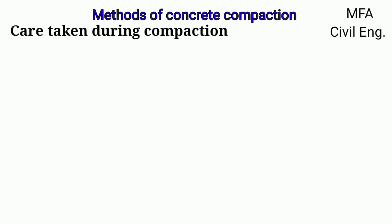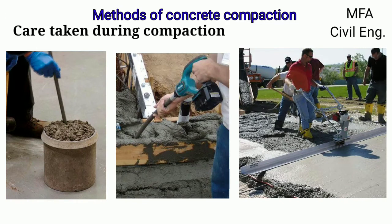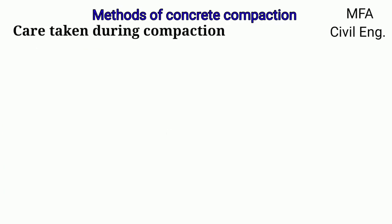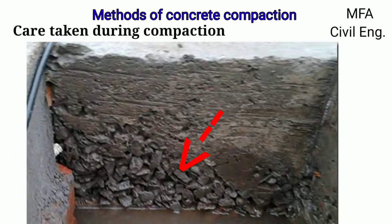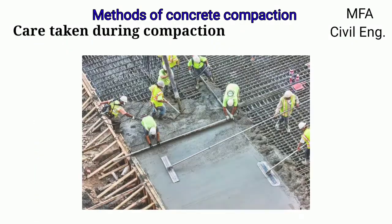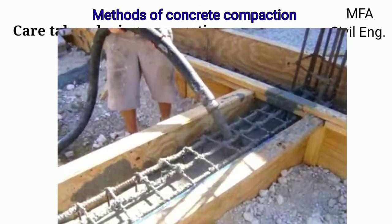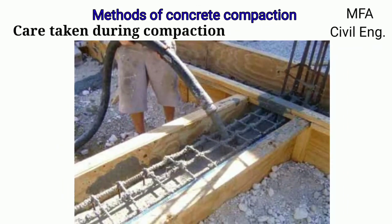Various precautions should be taken during the compaction process: choose the correct method of compaction according to the situation; avoid segregation of concrete and avoid bleeding, which occurs due to over-compaction; ensure that concrete uniformly reaches all nooks and corners of the formwork and reinforcement; and ensure that the reinforcement is not disturbed due to the concreting.